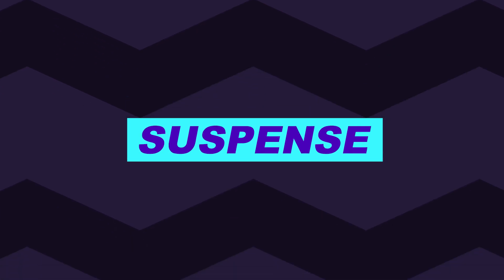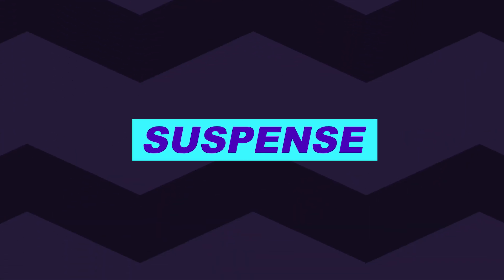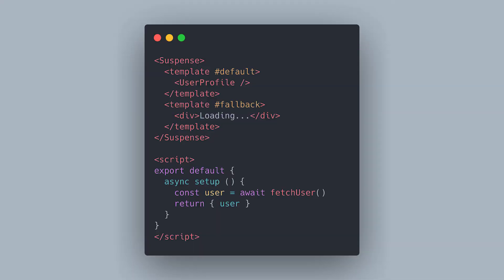Our last experimental feature is called Suspense. Suspense allows us to render our component when our async setup function has resolved, and show a fallback render like a loading indicator in the meantime. In this example, the fallback template is rendered first, and once the async setup function has resolved after fetching the user, the default template is then rendered. This simplifies component rendering that relies on async data like fetching from an external API. This feature is still mostly undocumented as it's waiting until Vue 3.1 for its final release, but it is accessible right now using Vue 3.